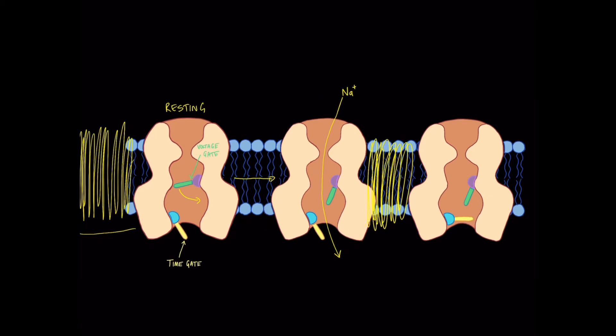If we look at the channel on the far right, something different has happened there: the time gate has closed. The time gate has gone from its resting position of being open to being closed. This happens a short period of time after the voltage gate opens, and it's a mechanism in place to prevent the channel from being open forever. The voltage gate opens, and to make sure that enough sodium comes in to cause depolarization but not too much, the time gate then closes. This makes the channel inactive — an inactivated channel.